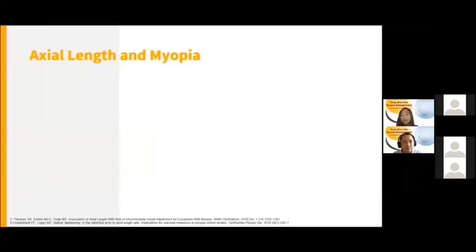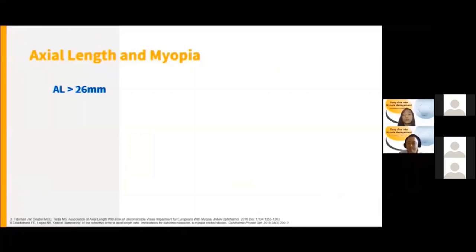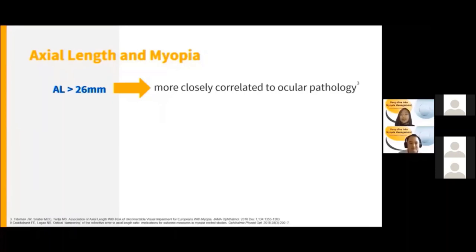The next important part is axial length and myopia. After knowing the average axial length values and the presence of the growth chart, what are the ranges of axial length increase associated with risk of ocular pathology? Research has actually shown that axial length is more closely related to ocular pathology, especially in those with axial length of more than 26 mm. So 26 mm is a very important number — a number that we should not exceed and one that we need to monitor. How does axial length measurement translate into diopters, since we deal with diopters more frequently?